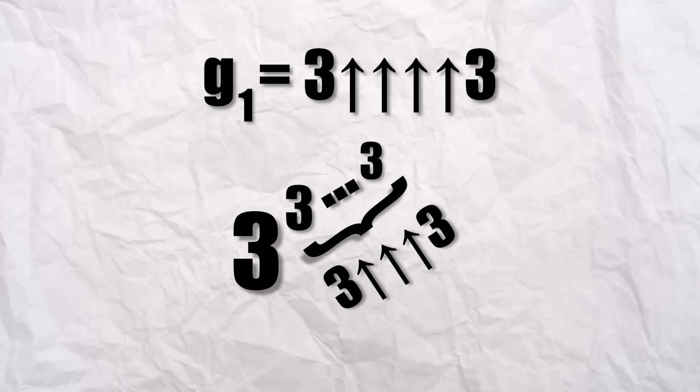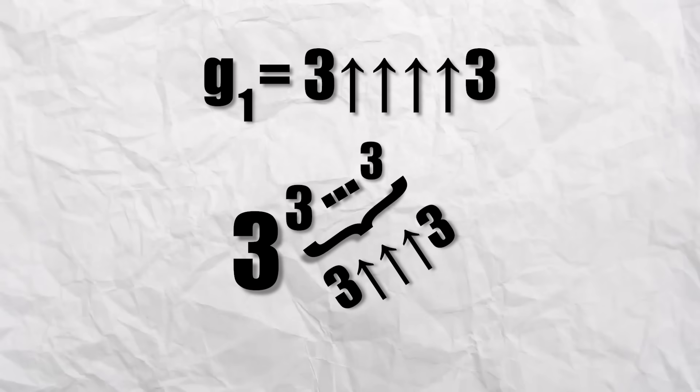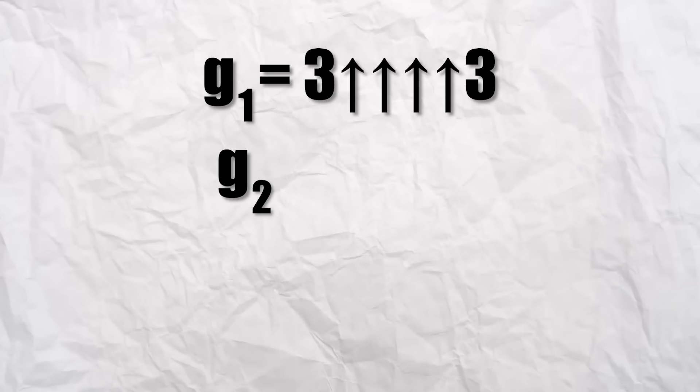We start with the number G1. This is 3 arrow arrow arrow arrow 3, which is already stupidly larger than 3 arrow arrow arrow 3. But it gets crazier with G2, which is the number 3 with G1 arrows.